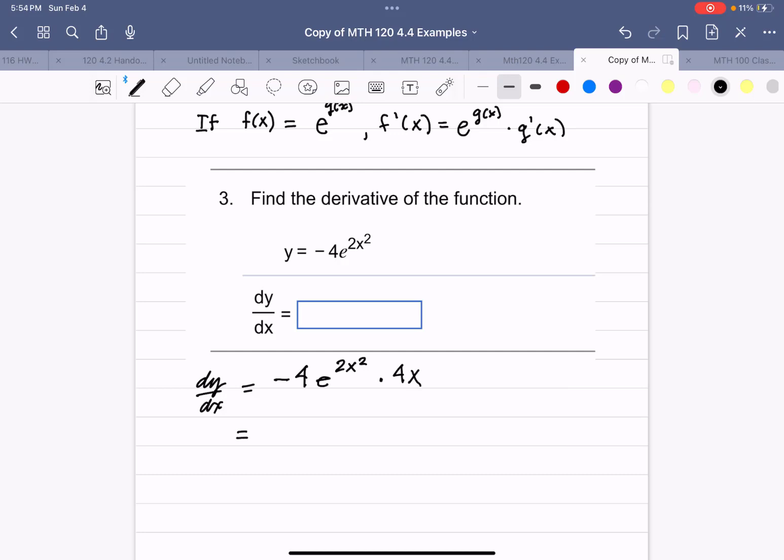Now we don't want to leave it like that when we have these two numbers that can be multiplied. So we're going to simplify negative 6e to the 2x squared times x, or maybe even a little better, negative 16xe to the 2x squared.